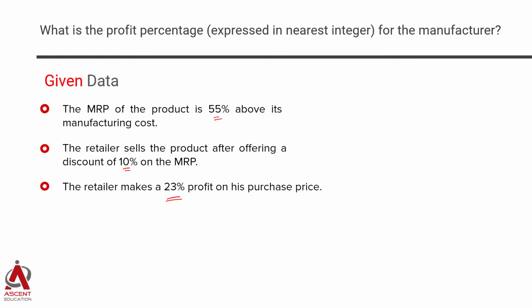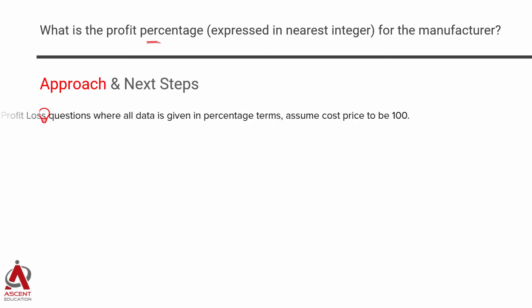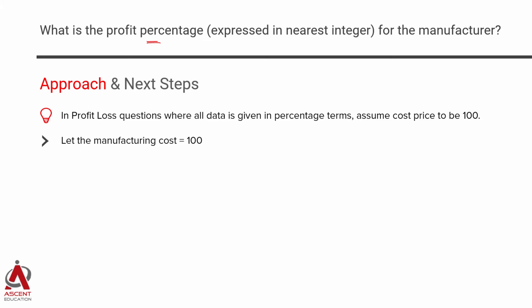All 3 data points are given in terms of percentage of something, and what we need to compute is also a percentage. In such cases in Profit and Loss, it's a good habit to assume the cost price to be 100. So here we're going to assume the manufacturer's cost to be 100.